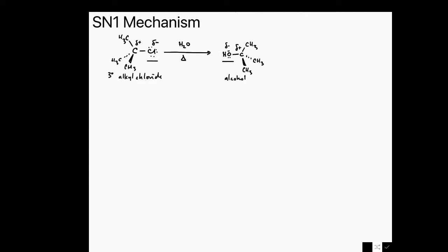This reaction will not proceed via SN2, because what I'm drawing in here is the antibonding orbital for that carbon-chlorine bond. And it's unlikely that our nucleophile, which is water, is going to attack that antibonding orbital due to the steric encumbrance of the three methyl groups on the carbon bearing the leaving group.